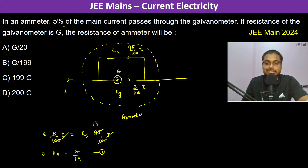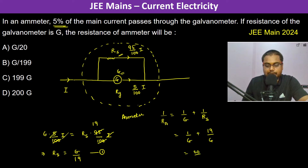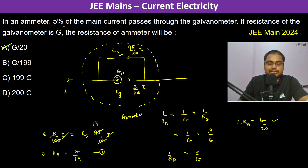We are asked for the resistance of the ammeter. Since RS and G are in parallel, we write: 1/RA = 1/G + 1/RS. Substituting RS = G/19, this becomes 1/G + 19/G = 20/G. Therefore, the resistance of the ammeter RA = G/20.